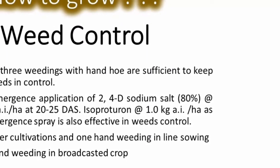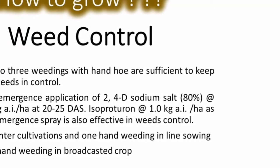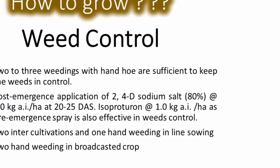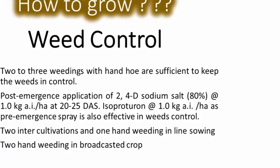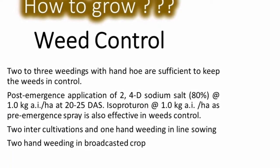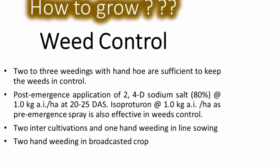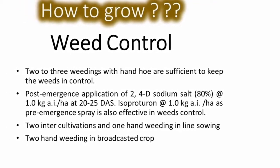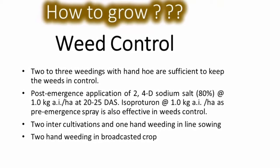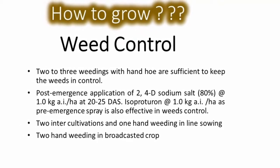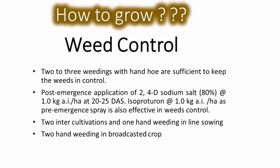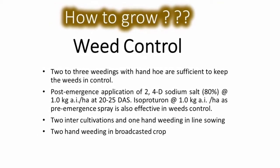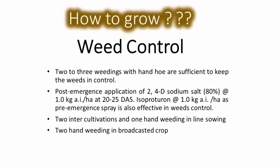For weed control, two to three hand weedings are sufficient to keep weeds in check. Post-emergence application of 2,4-D sodium salt 80% at 1 kg active ingredient per hectare at 20 to 25 days after sowing is recommended. Isoproturon as a pre-emergence spray can also be used. Two inter-cultivations with one hand weeding in line sowing, or two hand weedings in broadcast crop, are sufficient.